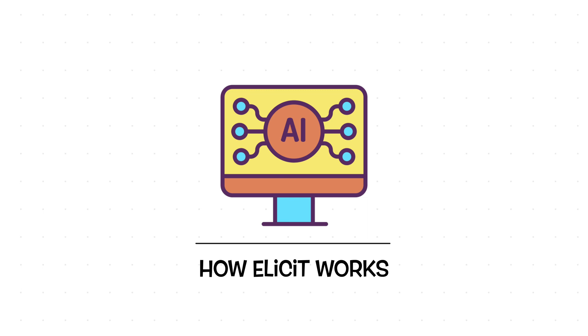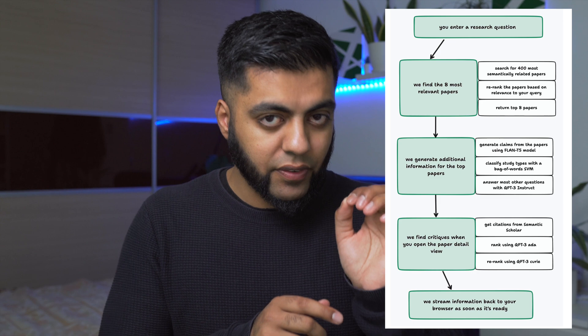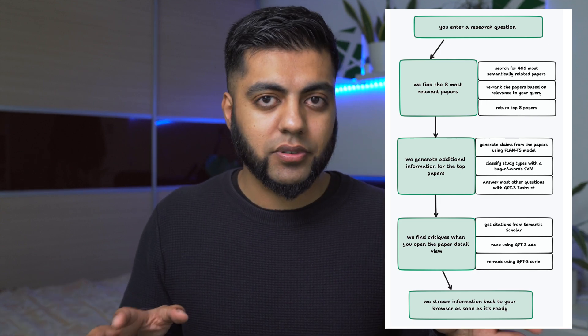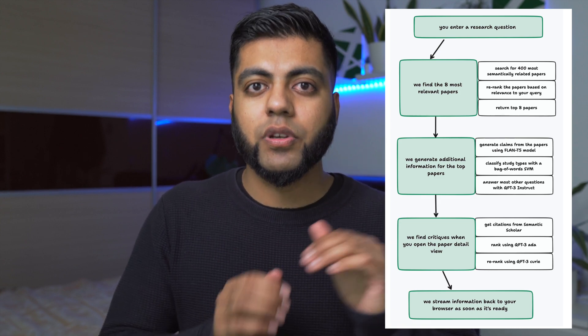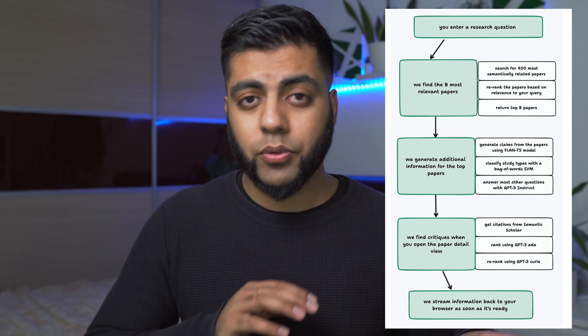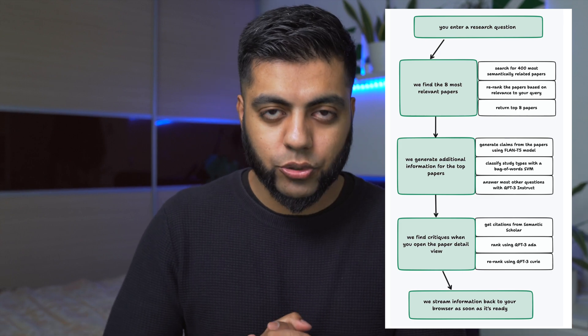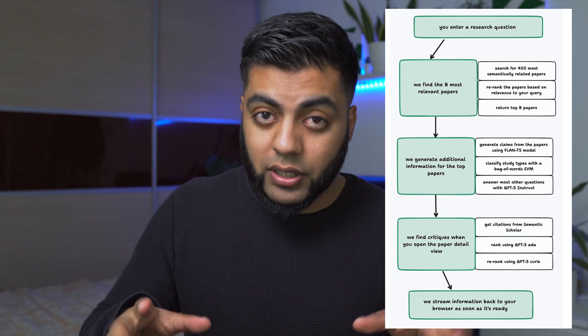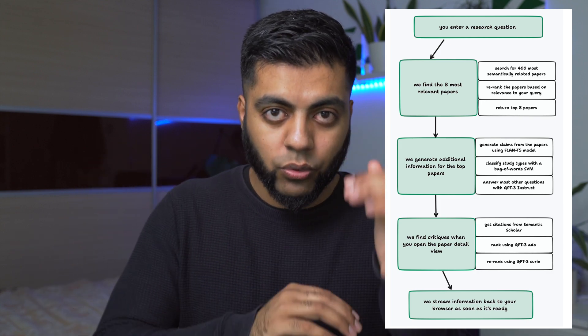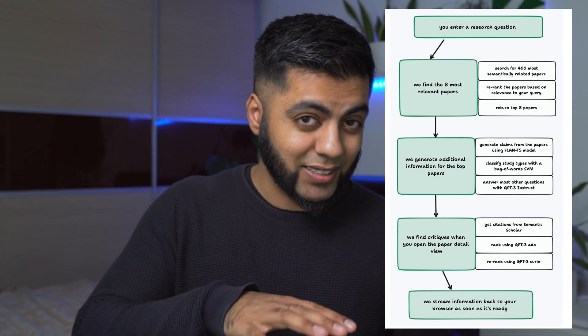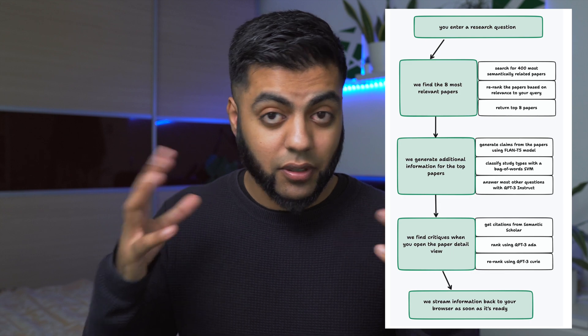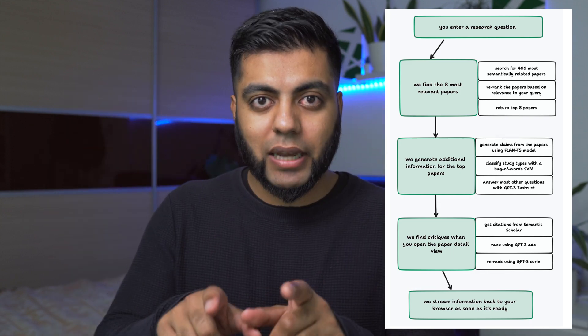To add a bit more context: you give it a research question related to your research, your PhD, something you need to look into. Normally you would find papers from Google Scholar, PubMed, and everything else, look at all these papers, find similarities and differences, and then collate your summary. Whereas with Illicit, as you can see in the graphic, you give it a research question, it finds eight research papers, re-ranks them accordingly, and sends you those re-ranked top papers. Then it uses all sorts of computation to look at all eight papers, finds the key information from all of them, collates it together, finds critiques, and then sends all of that information back to you in that query.